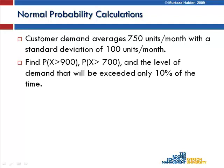For example, suppose you own a shoe store selling on average 750 shoes per month with a standard deviation of 100 units per month. If someone asks what is the probability that you may sell 900 shoes next month, or more than 700 shoes, you can use the standard normal transformation to get the answer. This is the Z-score: (x − μ) / σ.